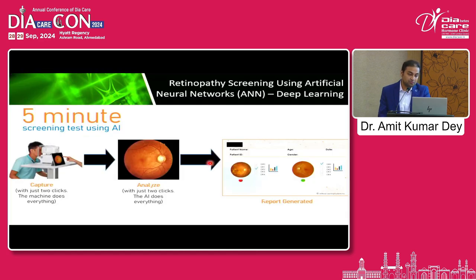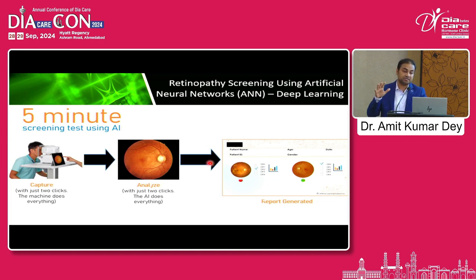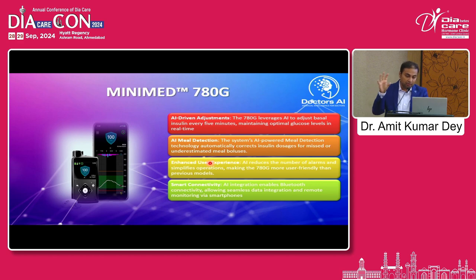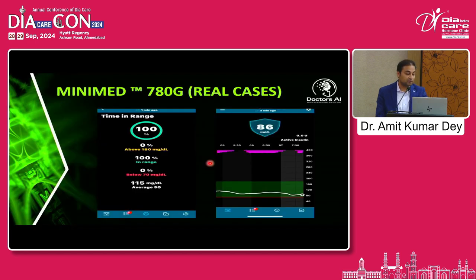Deep learning models in diabetic retinopathy screening increase the sensitivity of early mild-to-moderate NPDR detection and 100% screen out sight-threatening retinopathy so nobody goes blind. The AI-driven adjustments in the 780G insulin pump adjust basal insulin every five minutes driven by the PID algorithm control theory. It also has AI meal detection providing guidance on doses, smart Bluetooth connectivity, and results like 100% time-in-range in patients on 780G.